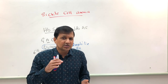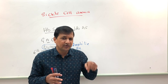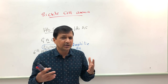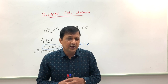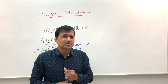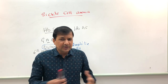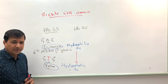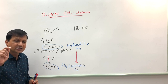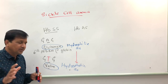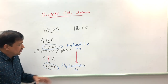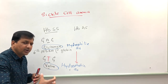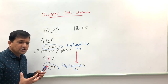When hemoglobin is in the deoxy condition, the valine at the sixth position of the beta globin becomes exposed. This only happens in the deoxy state. This exposed valine — a hydrophobic residue — interacts with hydrophobic amino acids on neighboring hemoglobin molecules. Note that in a red blood cell there are around 300 million hemoglobin molecules.